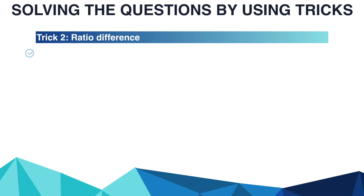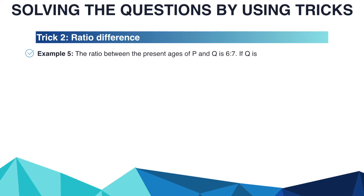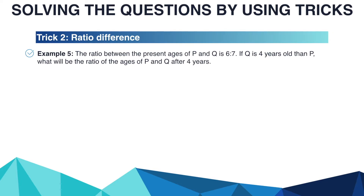Similarly, the next question: the ratio between the present ages of P and Q is 6 to 7. If Q is 4 years older than P, what will be the ratio of ages of P and Q after 4 years? Please try to solve this problem and write the answer in the comment box.